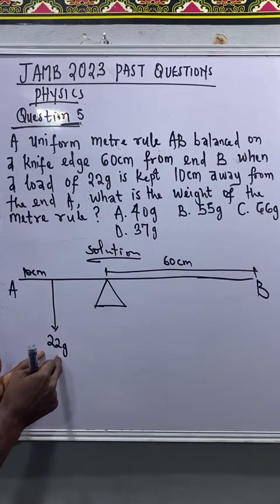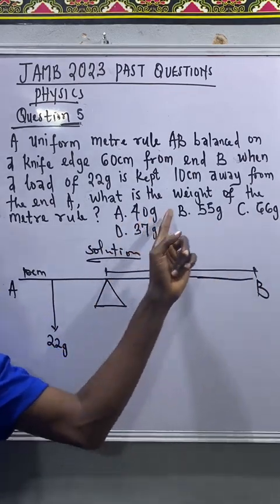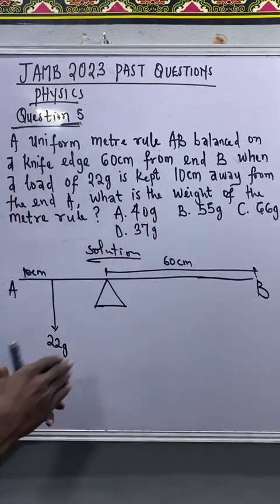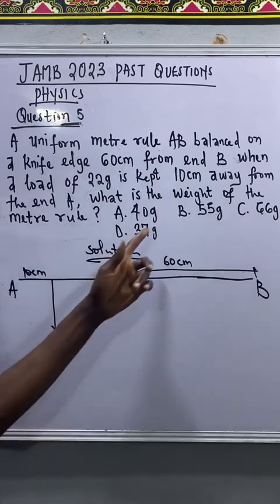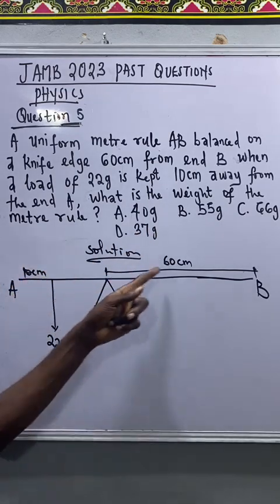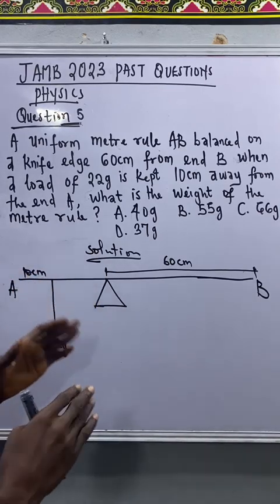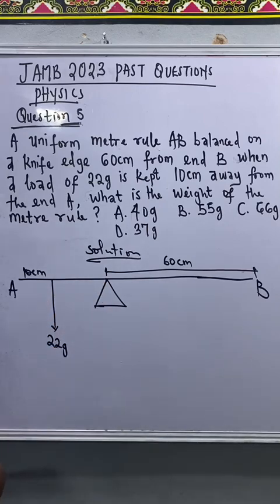You see the reason why I left my mass in gram without converting is because the final answer is left in gram, and that would be a waste of time converting to kilogram. And I'm using my length also in centimeters because in this kind of question certain things will cancel out, so length unit will cancel out, no need stressing yourself converting to meter.